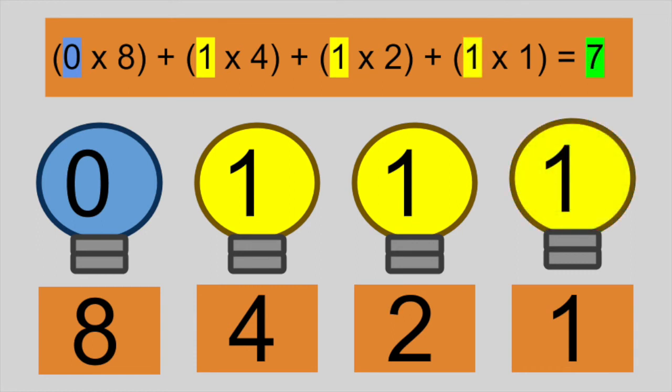To represent the value 7, we add up 1 times 4 plus 1 times 2 plus 1 times 1, so 3 ones, or in base 2, 7.